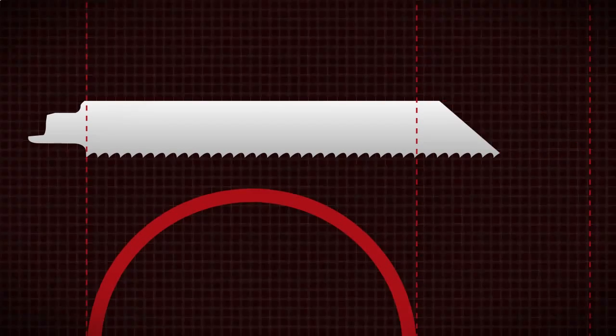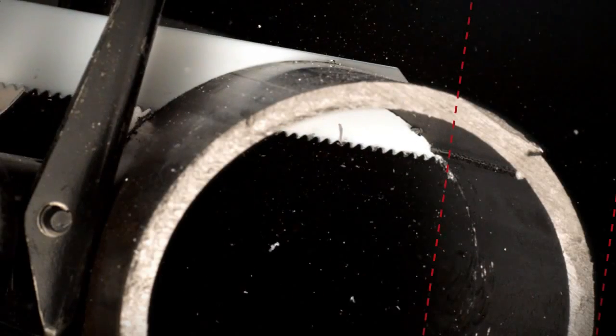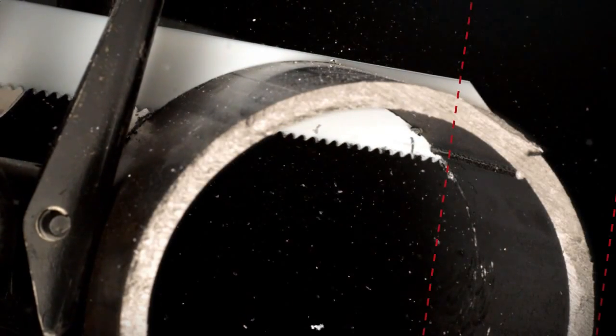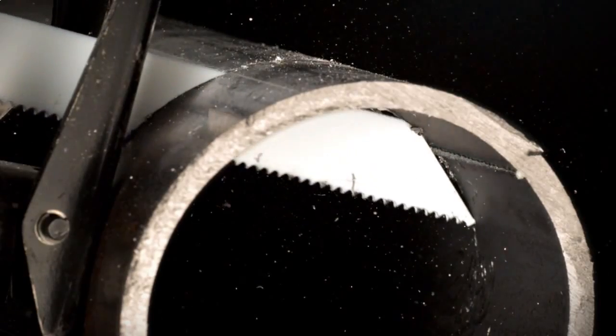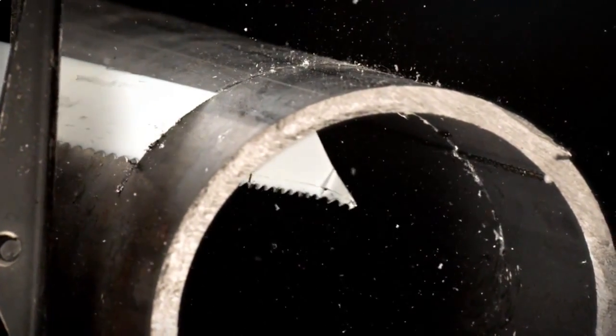When making a cut, choose a blade that's at least three inches longer than the diameter of the material being cut. If the blade is too short, the nose can jam against the material, bending upon impact. Other types of reciprocating blades may even shatter in this situation.